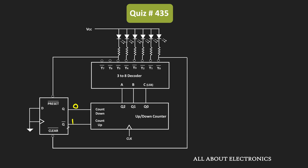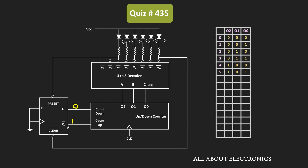Starting from 000, it will count in the upward direction. While counting upward, when the count of the counter goes to 101, then this Y5 output becomes low. And as soon as this output becomes low, the preset input will get generated for the flip-flop. Since this preset input is also active low, as soon as the flip-flop receives this asynchronous preset input, the output of the flip-flop will become high. That means now Q will become 1 and Q-bar will become 0, and therefore the counter will count in the downward direction.